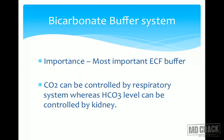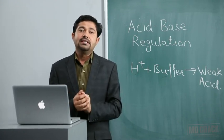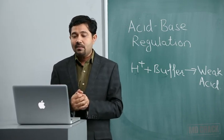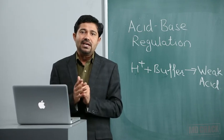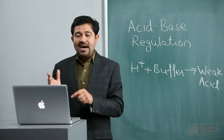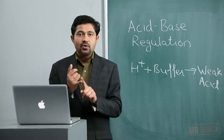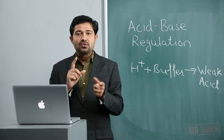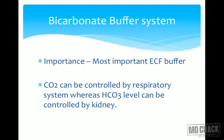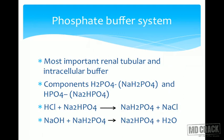The bicarbonate buffer system is the most important extracellular buffer system. One might ask: if ECF pH is 7.4 but the pK is 6.1, shouldn't this buffer be less active? However, it remains most important because both of its components are well-managed: CO2 is handled by the respiratory system and HCO3- is handled by the kidney. Even if one system fails, the other remains active.